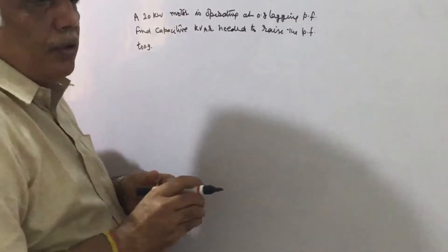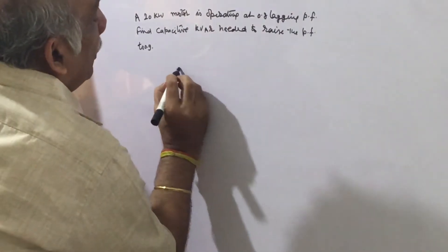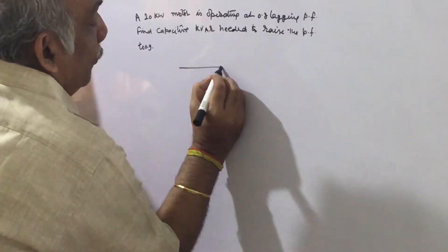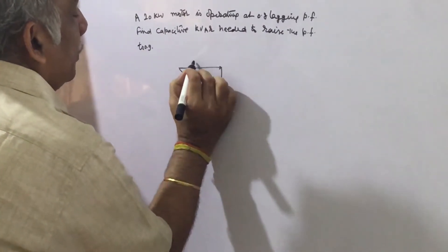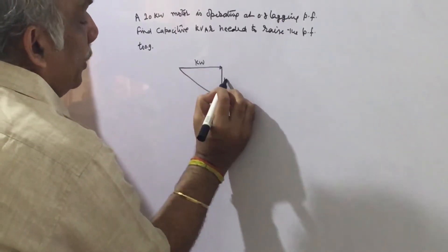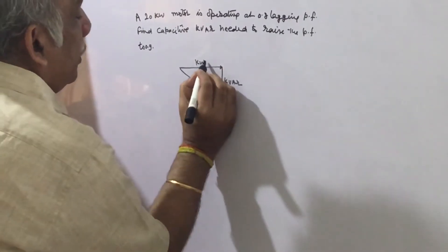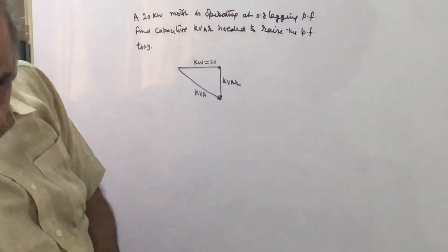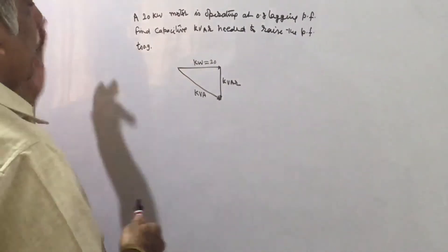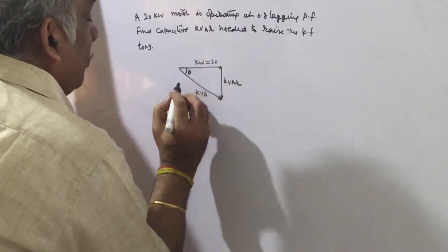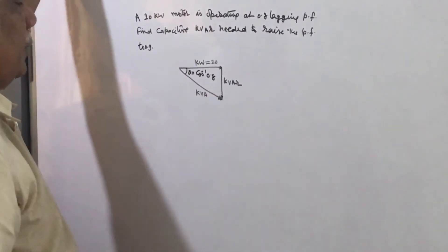We can solve this problem by drawing a power diagram. In this power diagram, we have kilowatt here, kVAR here, and kVA here. Kilowatt is 20, as given. This is theta with the power triangle, and this is cos inverse 0.8.